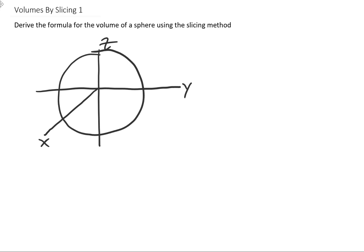Let's say that we have a sphere of radius r here. Now the volume by slicing method requires that we slice this sphere into pieces. Let's say that we slice this sphere along this axis here. You'll notice that we're just going to get a bunch of circles.